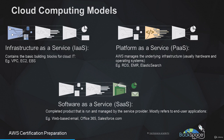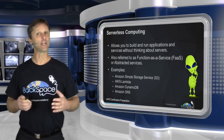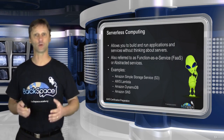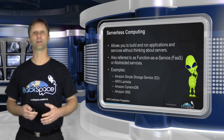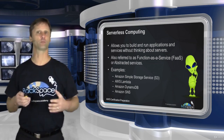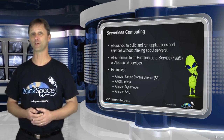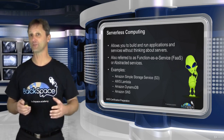Finally, Software as a Service is a complete product that normally runs in a browser and mostly refers to end-user applications — good examples are Office 365 or Salesforce.com. You'll also hear the term serverless computing a lot with AWS, which allows you to build and run applications without thinking about servers. You don't need to provision the server yourself — AWS does that for you. It's also referred to as Function as a Service or abstract services.